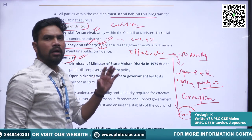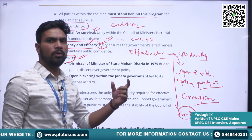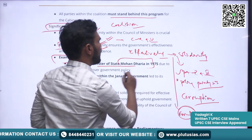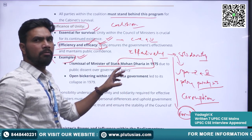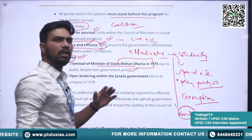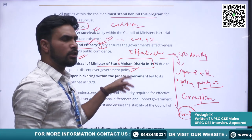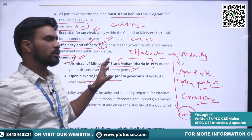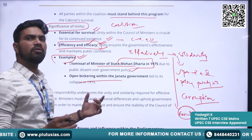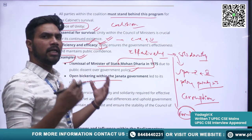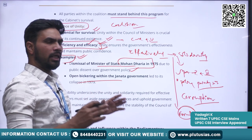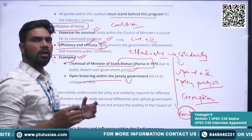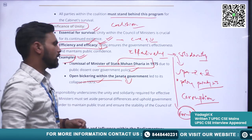Some historical examples: the dismissal of Minister of State Mohandaria in 1975 during the prime ministership of Mrs. Indira Gandhi — he publicly opposed the government and was dismissed from the Council of Ministers. Another example is the open bickering within the Janata government — after the defeat of Mrs. Indira Gandhi, the Janata government was formed but individual ministers freely expressed their discontent publicly, which led to the collapse of the Janata government in 1979.